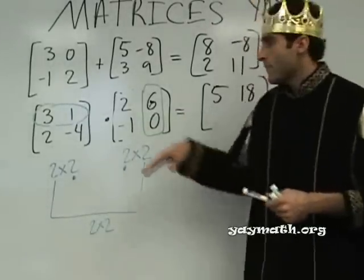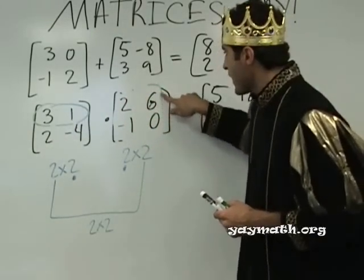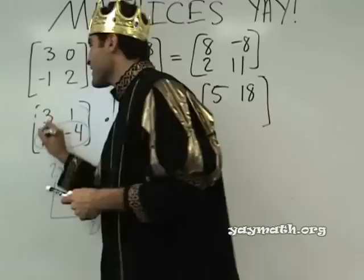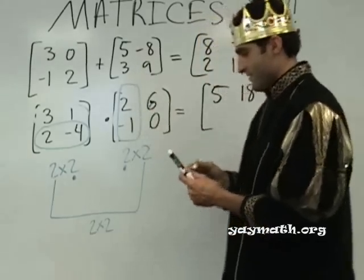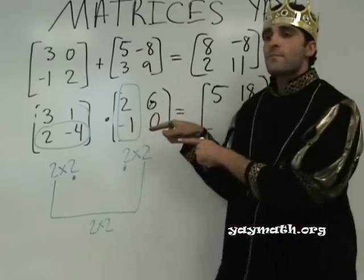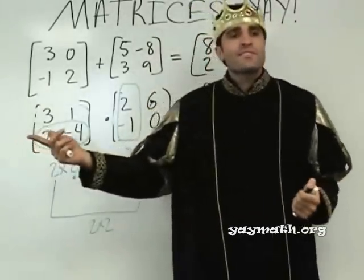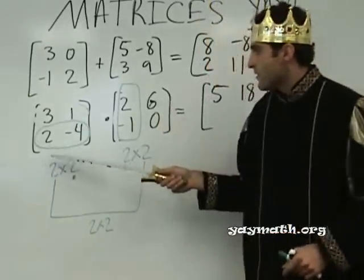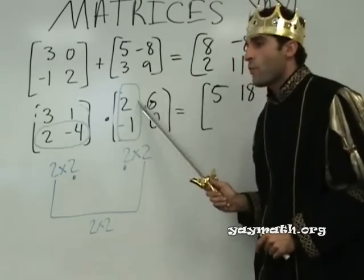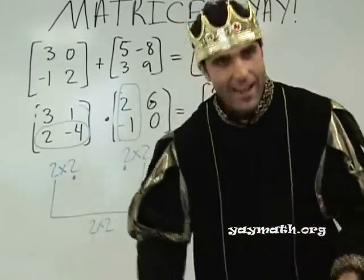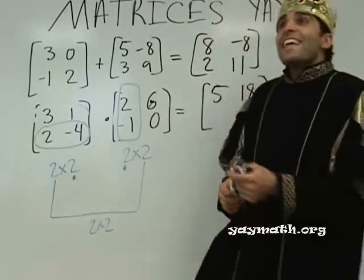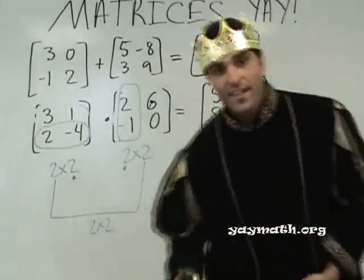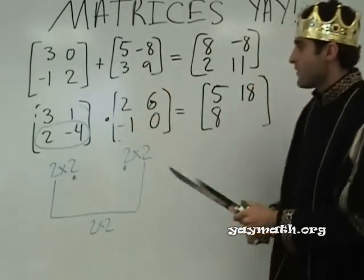Now we do the bottom row. Two times two is four, plus negative four times negative one is four — so four plus four is eight. And for the last one: two times six is twelve, plus negative four times zero is zero — so twelve. So the final matrix is five, eighteen, eight, twelve.